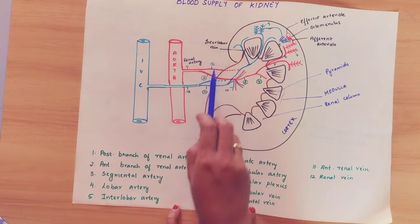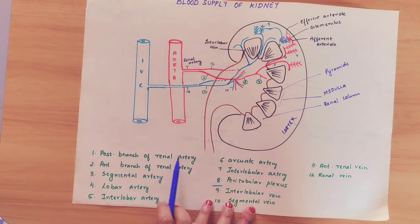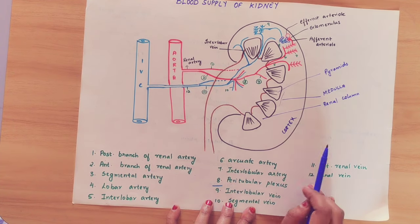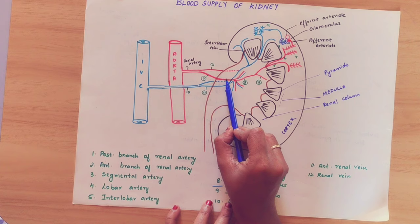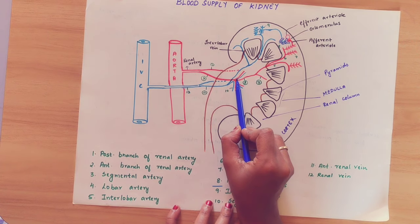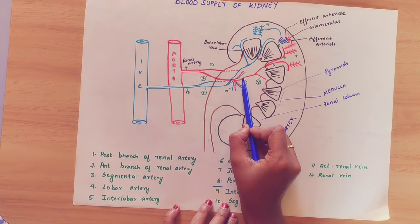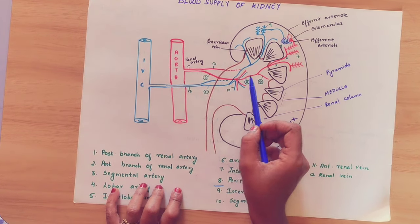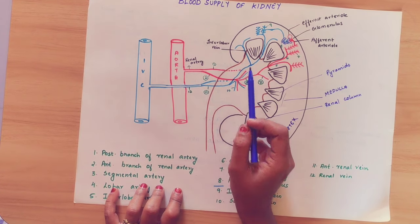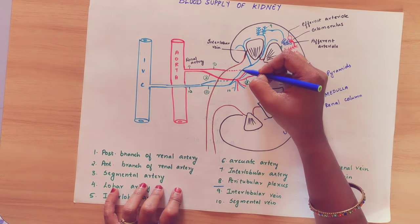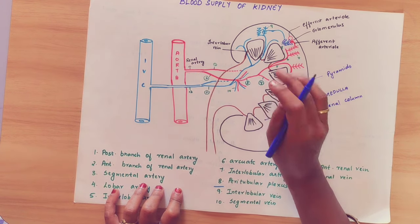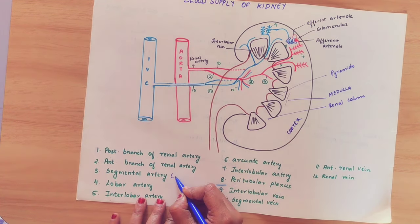The first branch is the posterior branch of the renal artery. The anterior artery gives rise to 4 segmental arteries, and the posterior artery gives 1 segmental artery — so there are 5 segmental arteries in total.